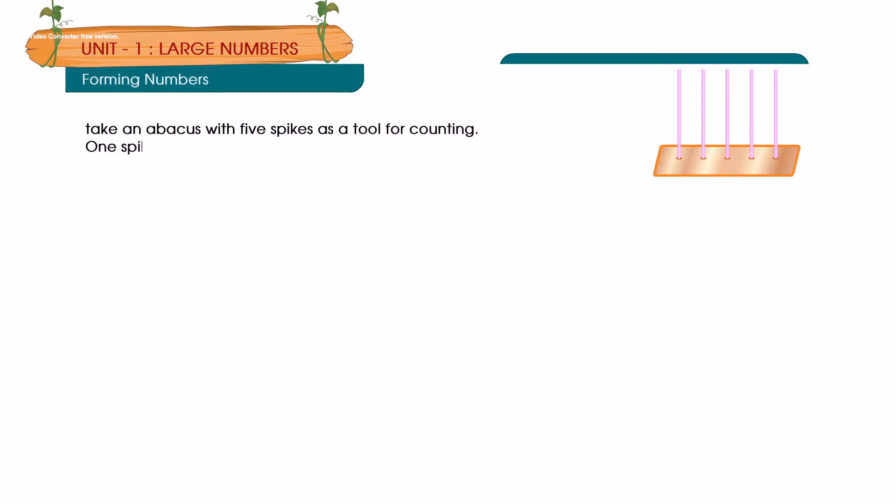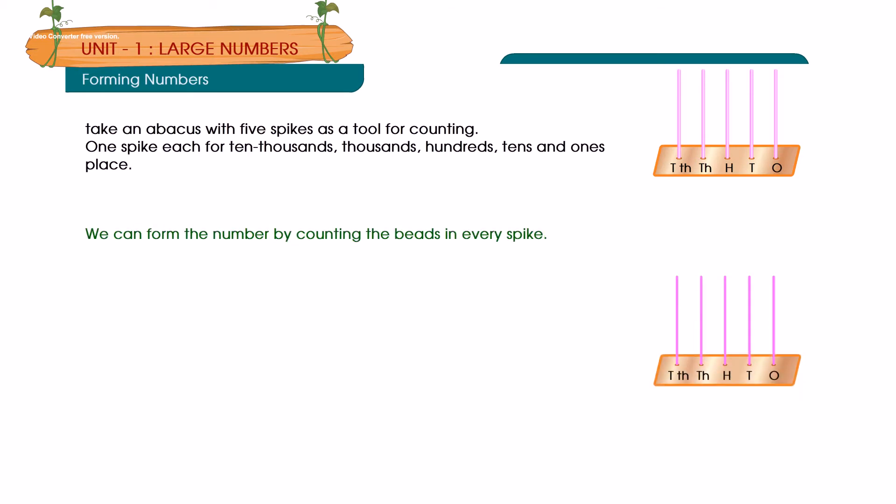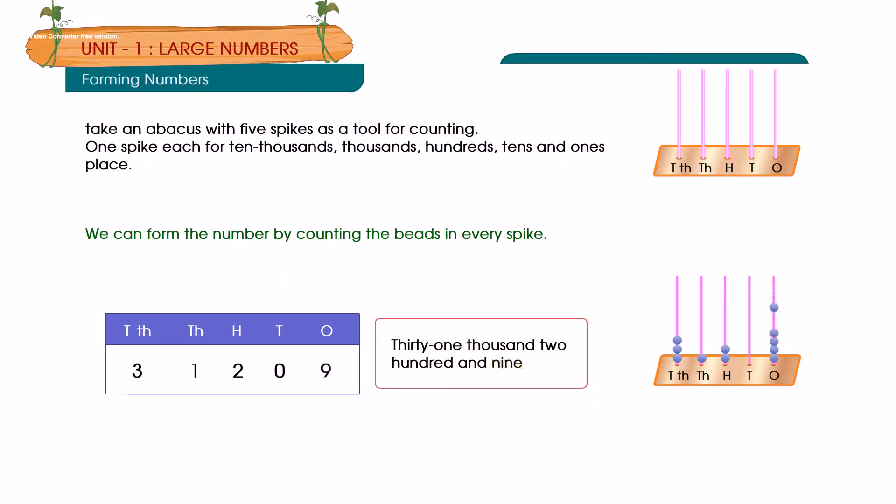Forming Numbers: Take an abacus with 5 spikes as a tool for counting - 1 spike each for 10,000, thousands, hundreds, tens, and ones place. We can form the number by counting the beads in every spike: 31,209, 68,450, 62,174, 52,830.